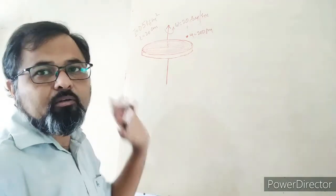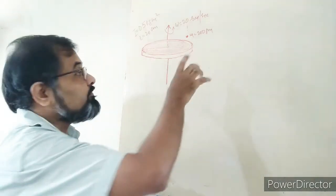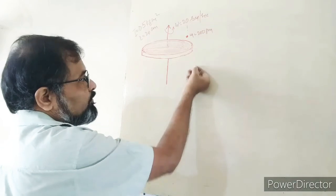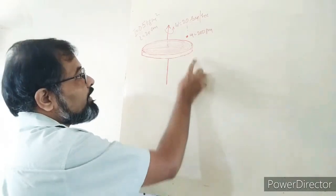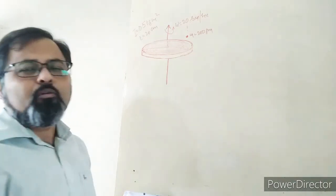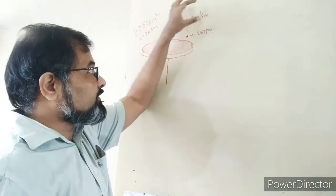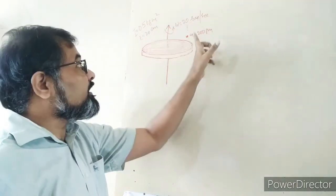Now the particle attaches to the edge of the wheel, so the angular velocity will change.